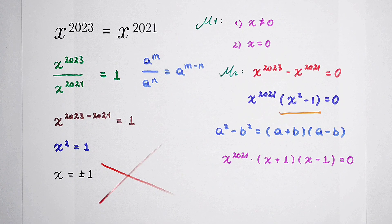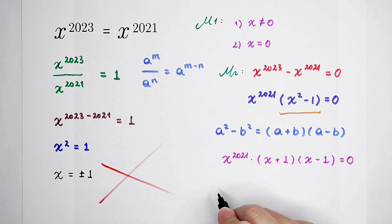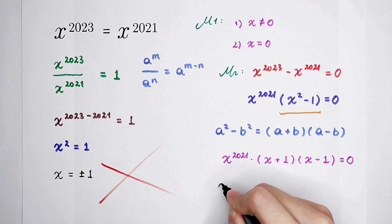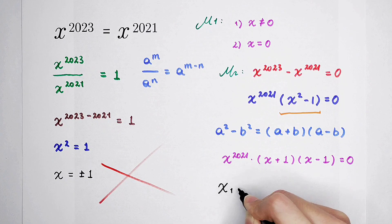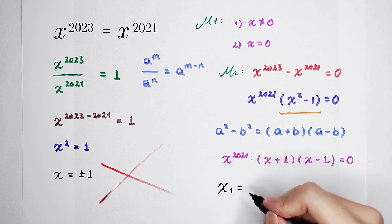So now, there are three answers. There are three cases. First, when x1 is equal to 0.